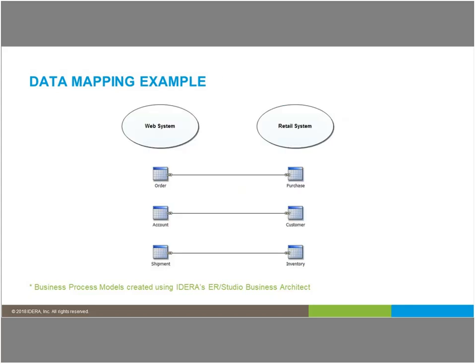This is a data mapping example — very high level. I've said I've got a web system and a retail system. My two tables may be completely different names in different places, but I want to show how that information is going to get mapped between one side and the other. As a DBA you'll get into far more complex metadata details, but when talking to the business side these kinds of pictures can be really helpful. Your web guys and retail guys can see: are we capturing the same information? Maybe order and purchase are completely different in one system and the other for a reason — and maybe they need to be handled separately, combined, or maybe there are best practices. This can start the conversation so they understand how all these systems need to map together.